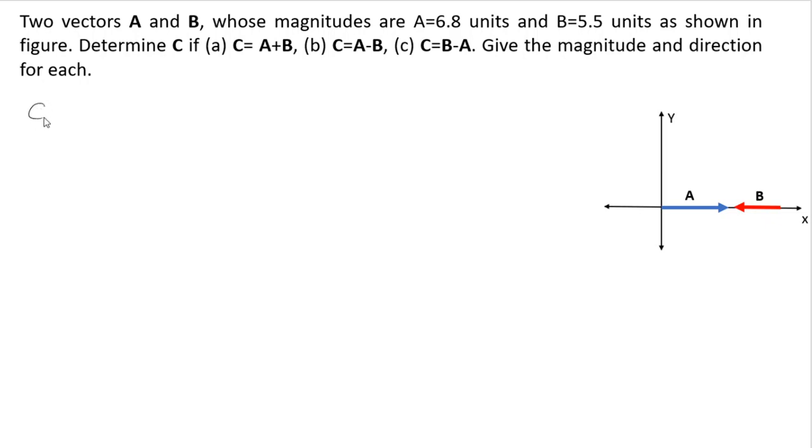So the first case is C equals A plus B. A is given as 6.8 plus B is 5.5 but in negative direction, so the answer will be 1.3 units. Because the answer is positive, we can say that this is in positive x direction. The magnitude is 1.3 units and positive x axis is the direction of the vector.